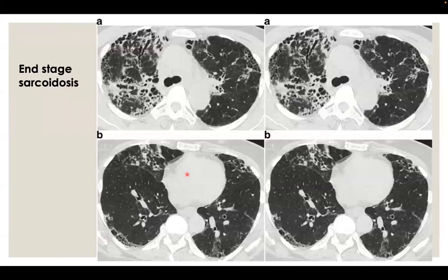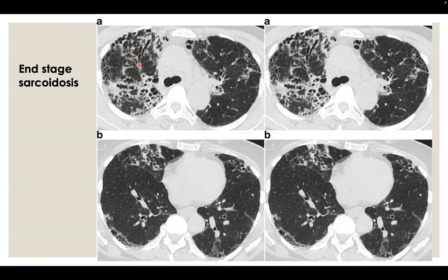Here is another typical UIP pattern for alternative diagnosis: end-stage sarcoidosis. There is predominance of fibrosis findings in the upper lobes compared to the lower lobes and presence of bronchocentricity. The feature suggesting end-stage sarcoidosis rather than fibrotic HP is the continuity of fibrosis from central to peripheral. This continuity is characteristic for sarcoidosis, plus the presence of consolidation — this is the pattern of fibrotic masses that come in end-stage sarcoidosis.